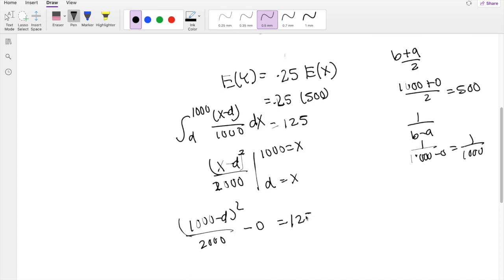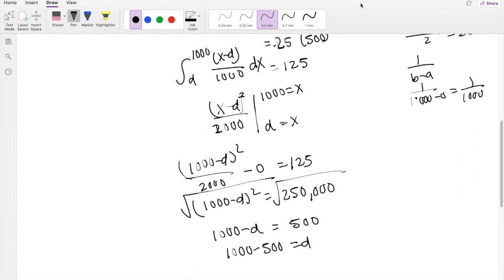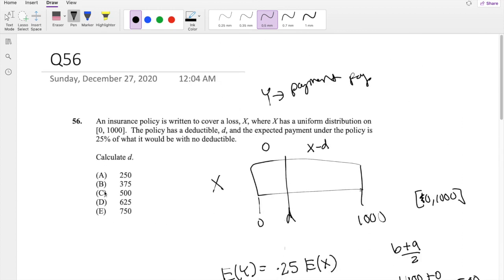Alright. So I can actually just multiply the 2000 to the other side. 125 times 2000, which is 250000. Take the square root on both sides. So now we get 1000 minus D is equal to 500. So then D is just 1000 minus 500 equals D, making D is equal to 500, which is our answer C.